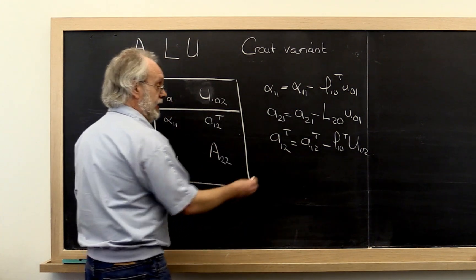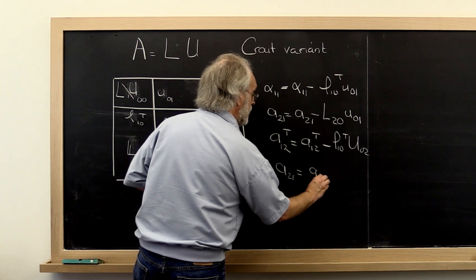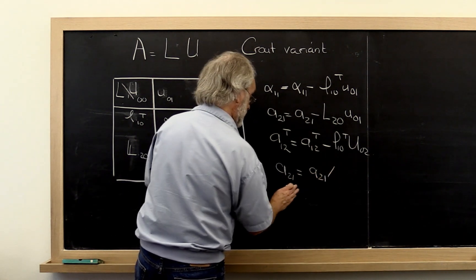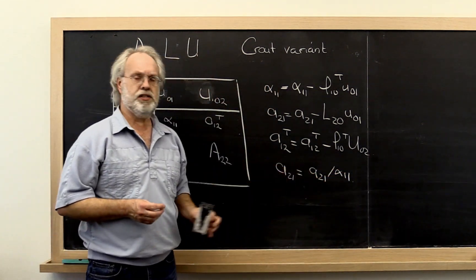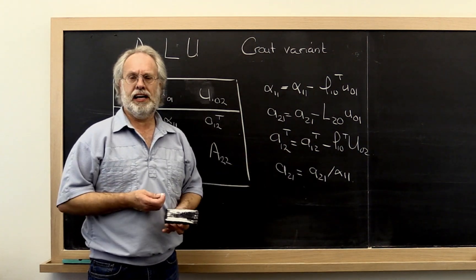And then finally, A21 has to be updated by dividing by alpha 11. And although we don't have an error result for that, it is not that hard to see that it would be easy to get those.